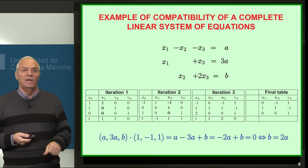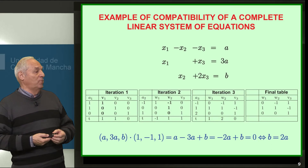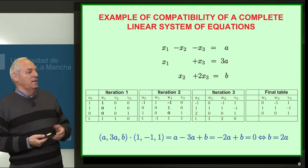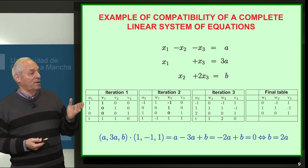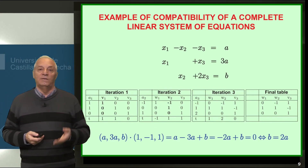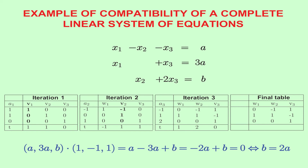If the independent terms vector (A, 3A, B) multiplied scalarly by (1, −1, 1) gives 0, it is orthogonal to it and the system is compatible; otherwise it is incompatible. Computing: A times 1 is A, 3A times −1 is −3A, B times 1 is B. Simplifying: A − 3A + B = −2A + B = 0, which means B = 2A. So if B equals 2A the system is compatible, and if B is different from 2A it is incompatible.